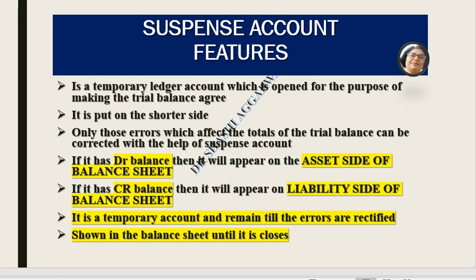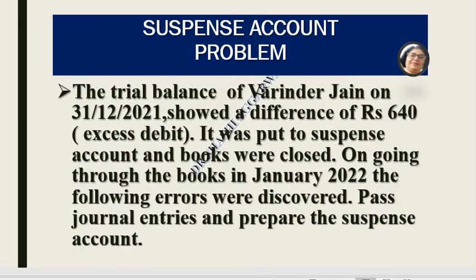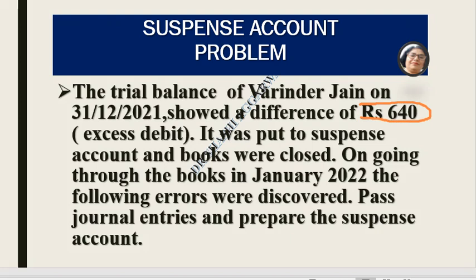Now we will understand this with an example. The trial balance of Vrinda Chan on 31 December 2021 showed a difference of Rs. 640 excess debit. Since the debit side is bigger, the difference of 640 is added on the credit side as the suspense account. The books were closed, and later the following errors were discovered. We have been asked to prepare journal entries and open the suspense account.